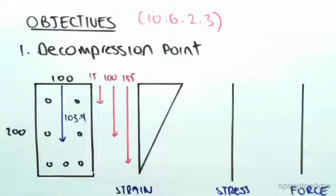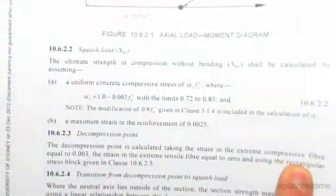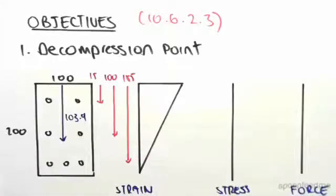And it says that the strain in the extreme compressive fiber is 0.003, and the strain in the extreme tensile fiber is zero. So the strain diagram is very simple. Here's the strain diagram.